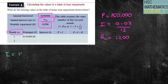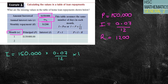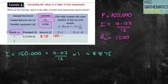Now we can start working out the interest. The interest for the first month uses I = PRN: $150,000 × 0.07/12 × 1, which gives $875. Write that into your table. P plus I means I now owe $150,875. Subtract the repayment of $1,200, and I get a closing balance at the end of the first month of $149,675.